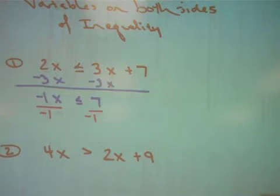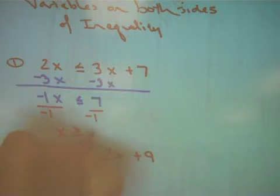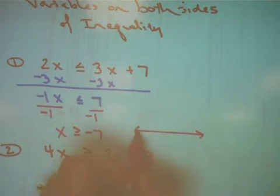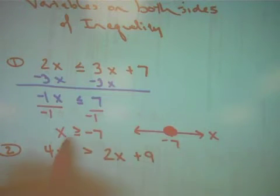Do you remember what happens to the inequality symbol? X is now greater than or equal to negative 7. I'll draw my number line. Here's my x, my solution of negative 7. It's a filled in circle and x's get greater than going to the right.